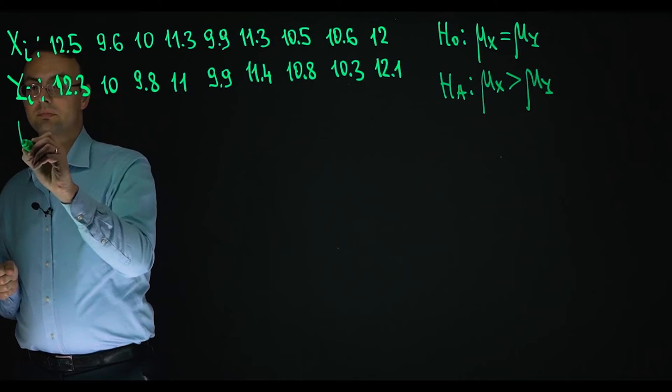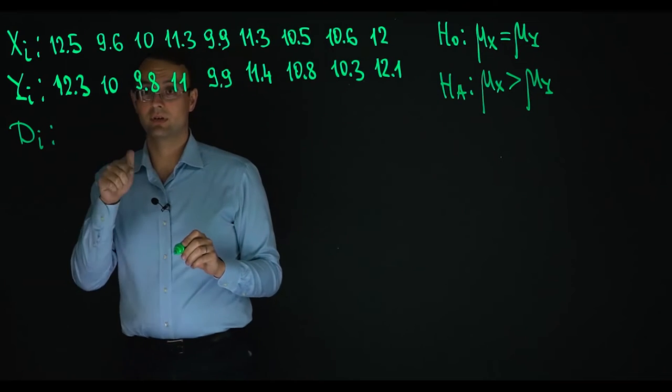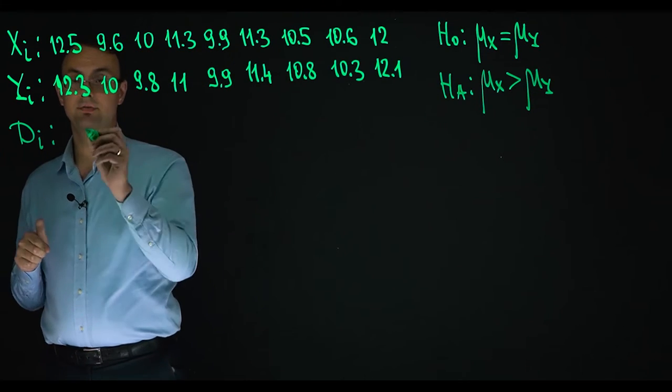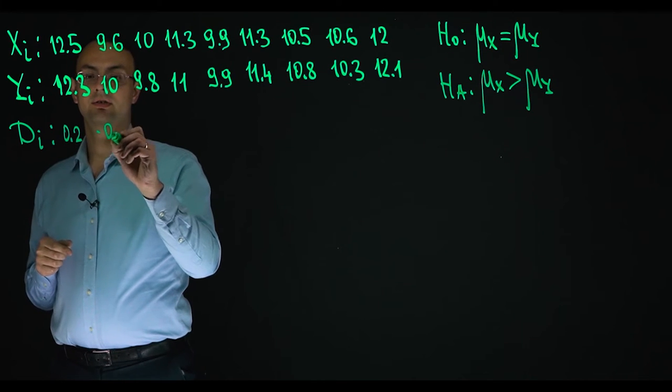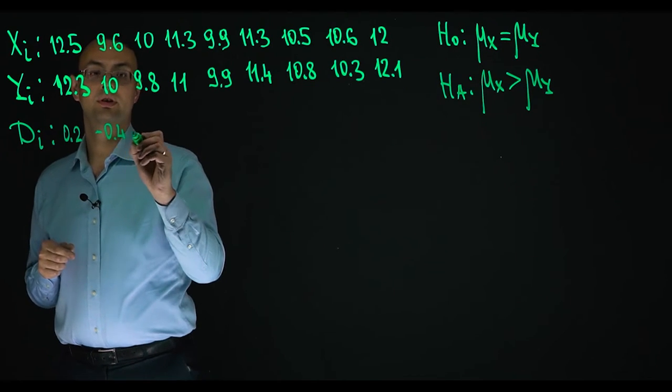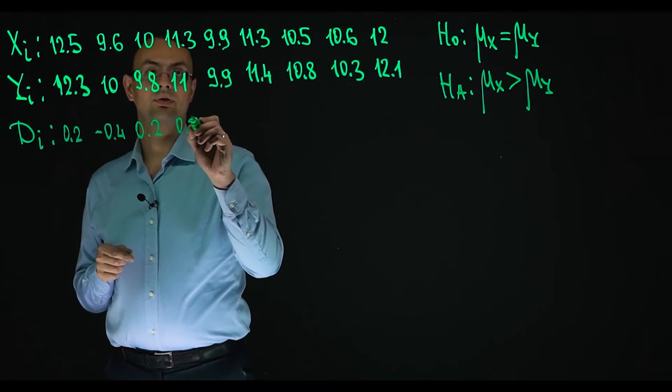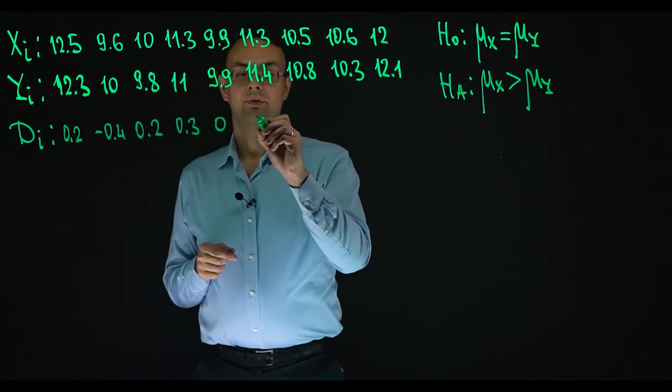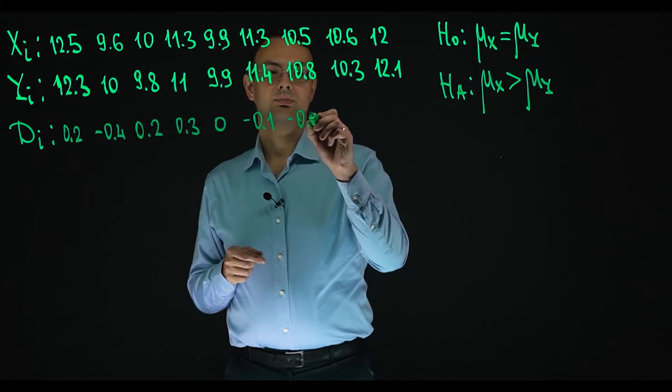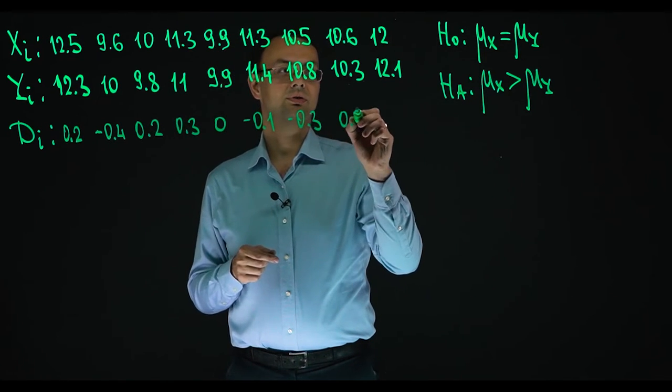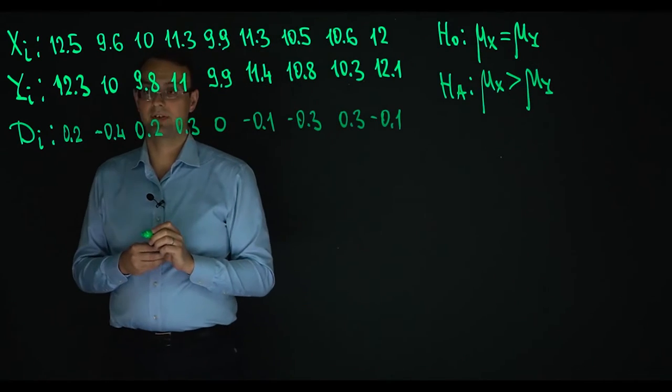So the first step is the same as in a student's test to find differences. So differences are 0.2, minus 0.4, 0.2, 0.3, 0, minus 0.1, minus 0.3, 0.3, minus 0.1. So these are the differences.